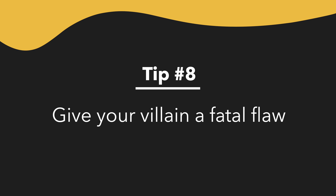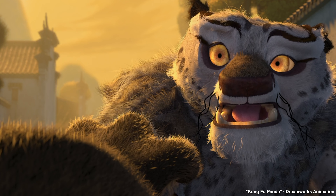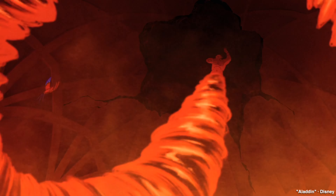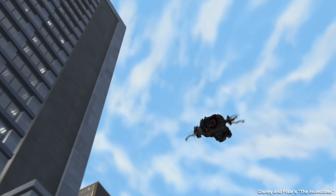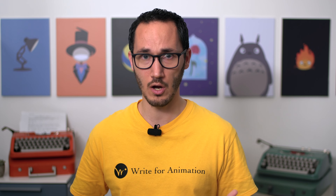Tip number eight: Give your villain a fatal flaw. We love villains, but in the end they lose — they could defeat the hero, but they just don't manage to. Tai Lung's refusal to accept there might be another warrior better than him is what ultimately brings him down. Jafar's unending thirst for power leads him to wish he were a genie, thereby trapping himself in the lamp. Syndrome's own robot turns out to be his demise. Many times, the villain's own convictions blind them, stopping them from succeeding — their very ideologies are why evil doesn't prevail.